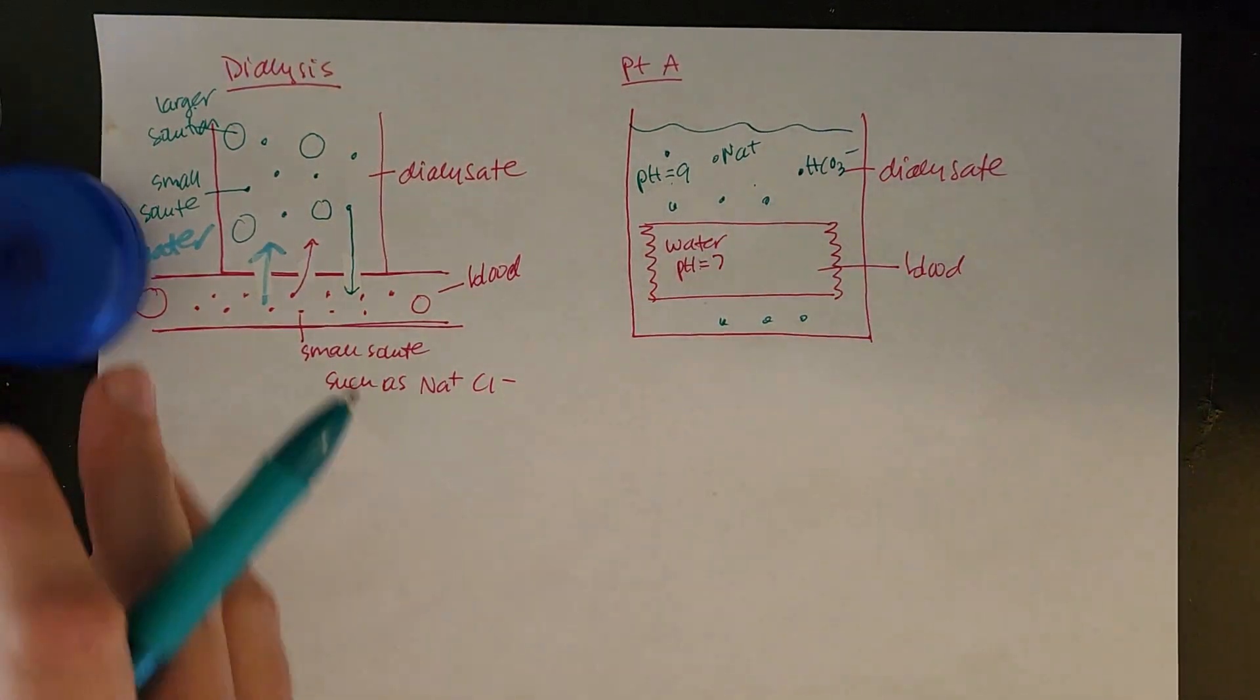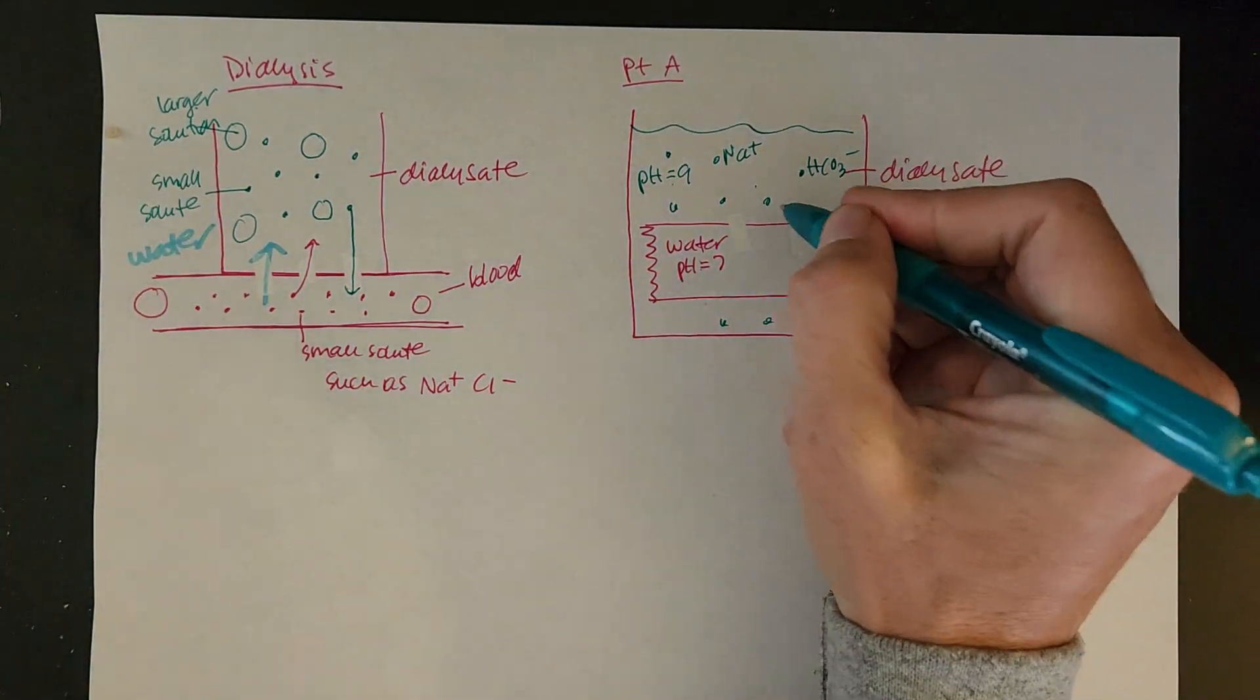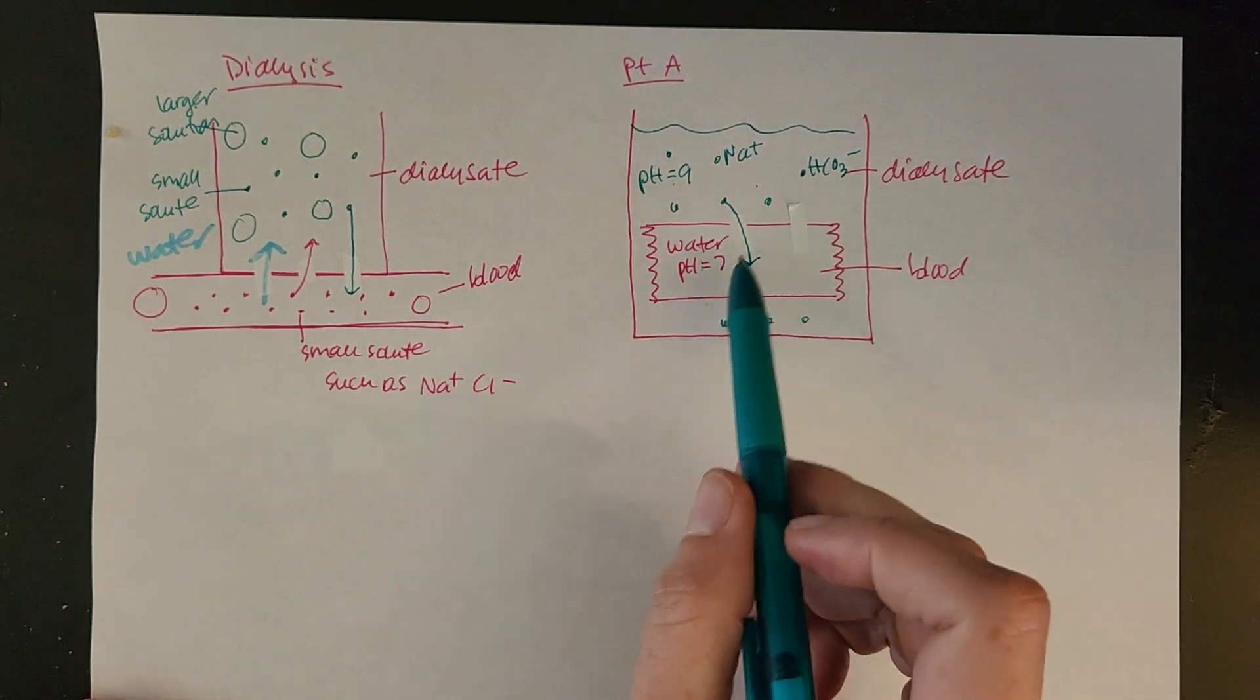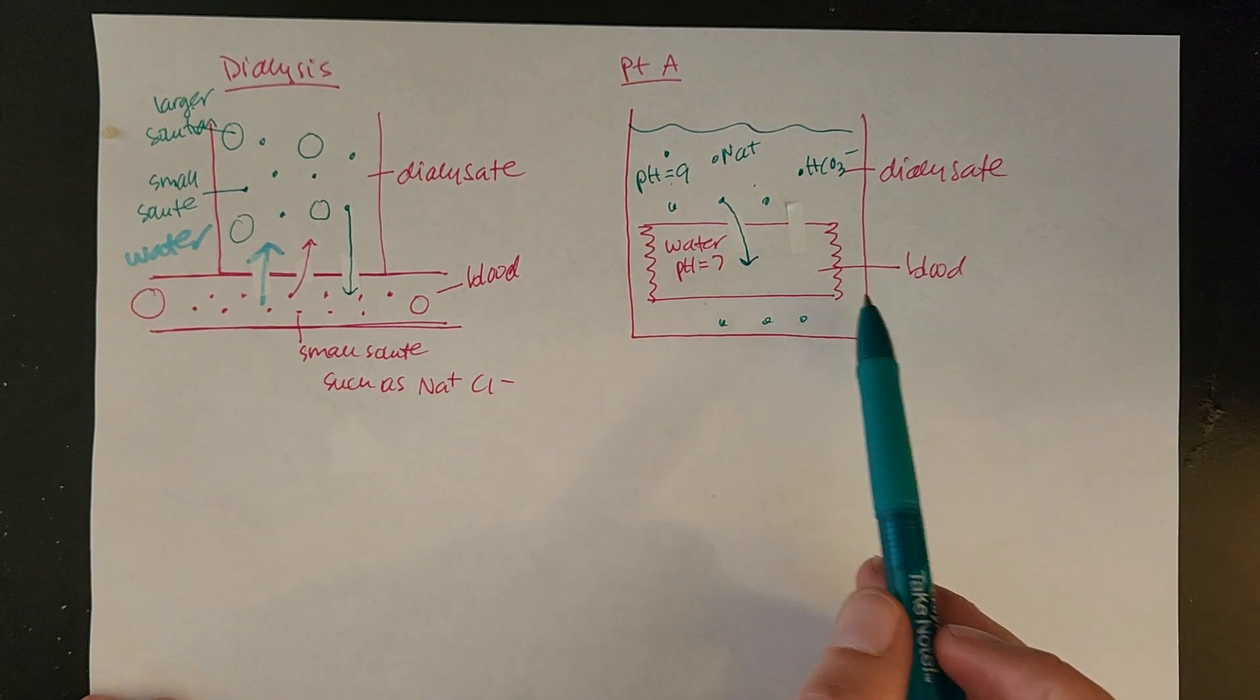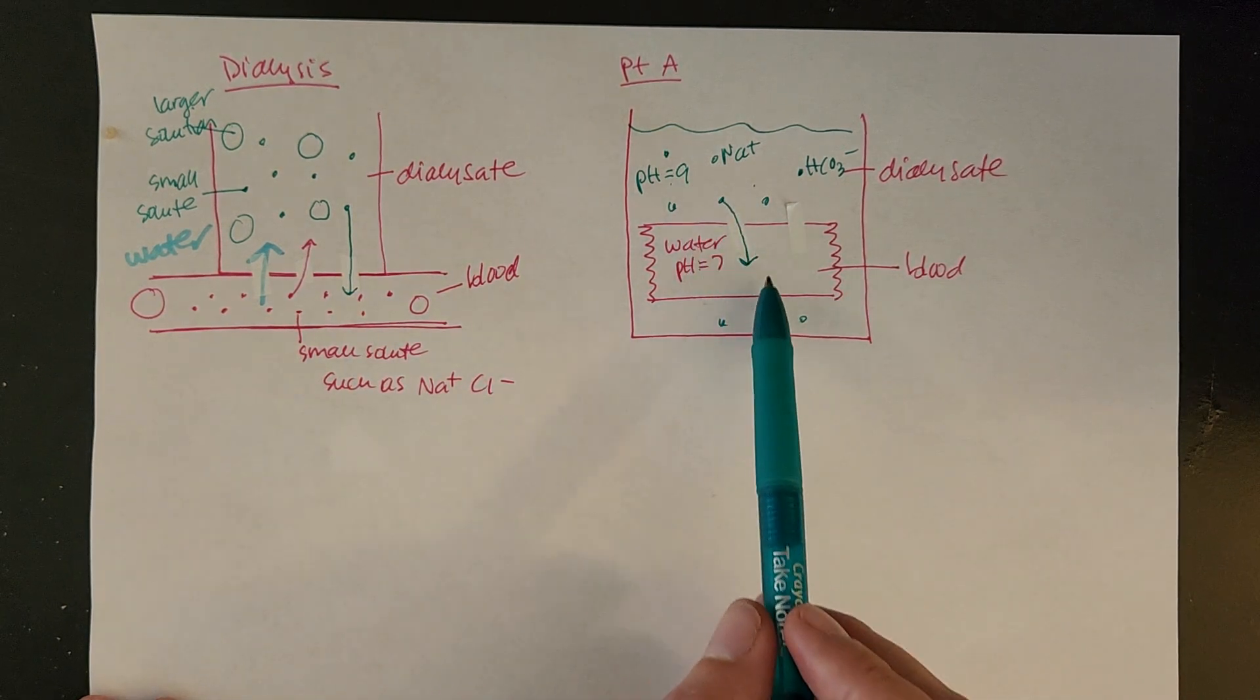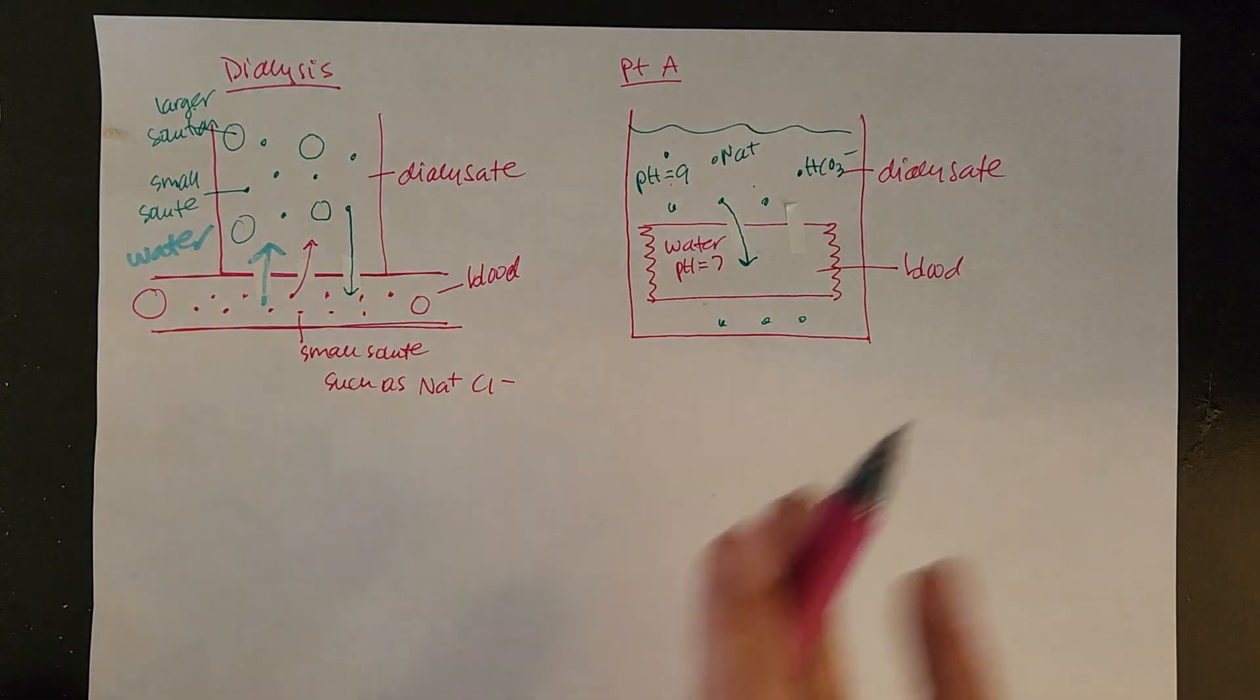And so we'll have solutes outside and no solutes inside. Okay? And these will be our initial pHs. And so we'll wait and see what happens. But you can probably guess, right, if there's small holes in this semipermeable membrane, then some of that solute should start to move into the blood. And so this would be proving to us this green arrow is possible. That solutes can move from outside of the blood and be pushed into the blood. All right? So that would be part A.